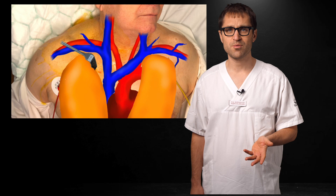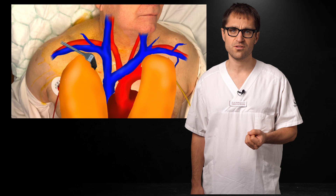Identifying the subclavian vein can be a bit more challenging. The vein is most often located ventral and caudal to the artery — in other words, it's shallower and further down. The vein is found below the clavicle, as you know from the traditional landmark technique.